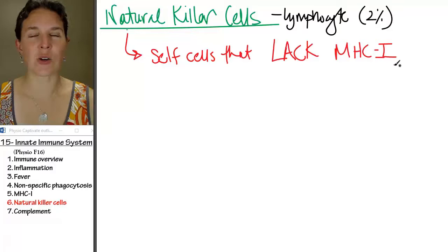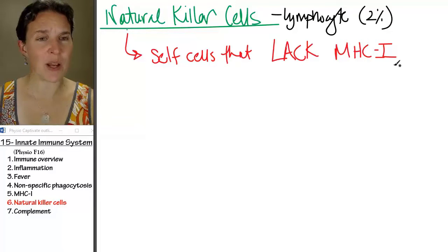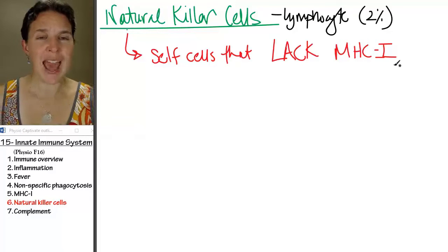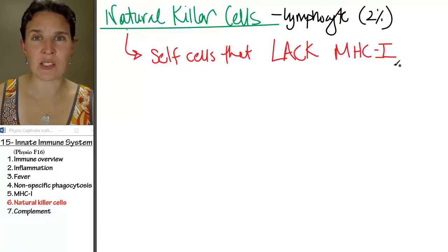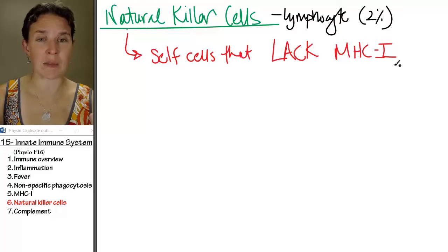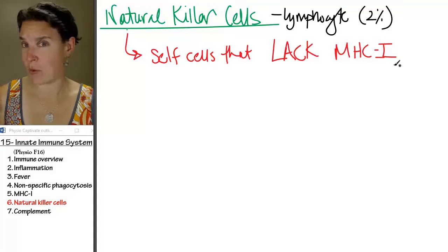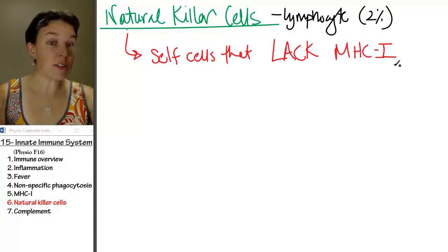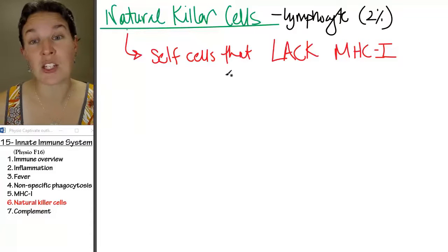Everybody has MHC1 except for red blood cells. And there must be some reason why natural killers do not attack red blood cells. I don't know what that mechanism is, but natural killers do not attack red blood cells. But all your other cells are supposed to have MHC1.